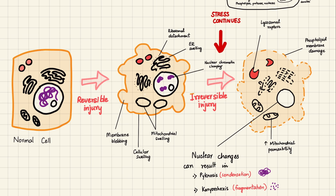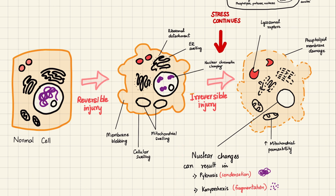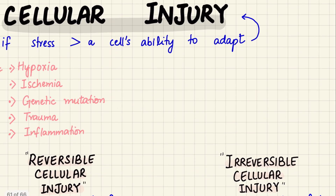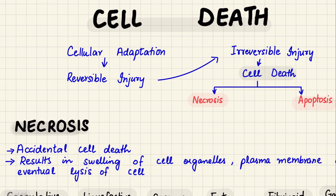In this diagram we can see the multiple steps from a normal cell going through reversible injury and then irreversible injury toward cell death. In reversible injury we see membrane blebbing, cellular swelling, mitochondrial swelling, ribosomal detachment, ER swelling, and nuclear chromatin clumping. In irreversible injury there are nuclear changes, lysosomal rupture, phospholipid membrane damage, and increased mitochondrial permeability — all leading to cell death.